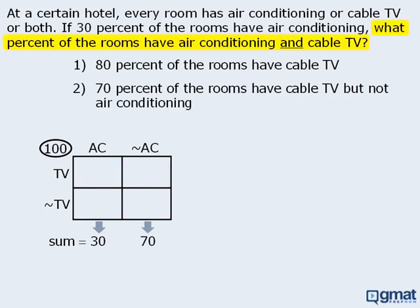Our goal is to determine what percent of the hotel rooms have both air conditioning and cable TV. Since this box represents rooms with air conditioning and cable TV, all we need to do is find the number of rooms in this box to answer our target question. Let's place a star in this box to remind us that this is our target box.